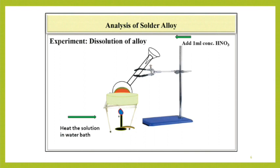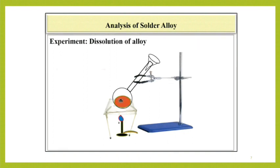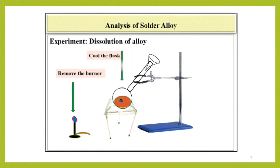In this step, tin is first converted to insoluble metastannic acid and then to insoluble tin dioxide. Lead is converted to soluble lead nitrate. After this step, remove the burner and cool the flask well at room temperature.